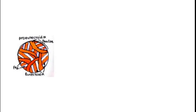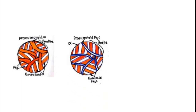Recalling the microstructures: in the hypo eutectoid zone, we see pro eutectoid alpha, while in the hyper eutectoid zone, we see pro eutectoid Fe3C. There is a difference in size and shape — the pro eutectoid is thick in the hypo eutectoid zone and thin in the hyper eutectoid zone. This is not a coincidence; the microstructure is drawn that way purposefully.